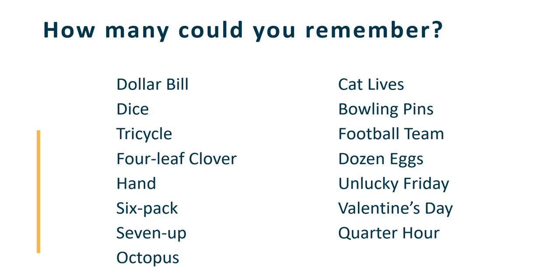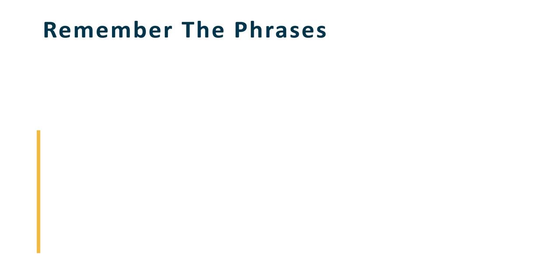So now that you took a minute to look at how it's organized, you probably came to the realization that the list is organized according to number. We start with a dollar bill, one. We move to dice, which is two, tricycle, three, four-leaf clover, four, and so on as the list goes. Okay, so now that you know how it's organized, we're going to do this activity one more time. I'm going to give you 45 more seconds where I'll keep this video running for you to study the list again, try to memorize the phrases, and then once again, when the time is up, you can pause the video and try to write down as many phrases as you remember.